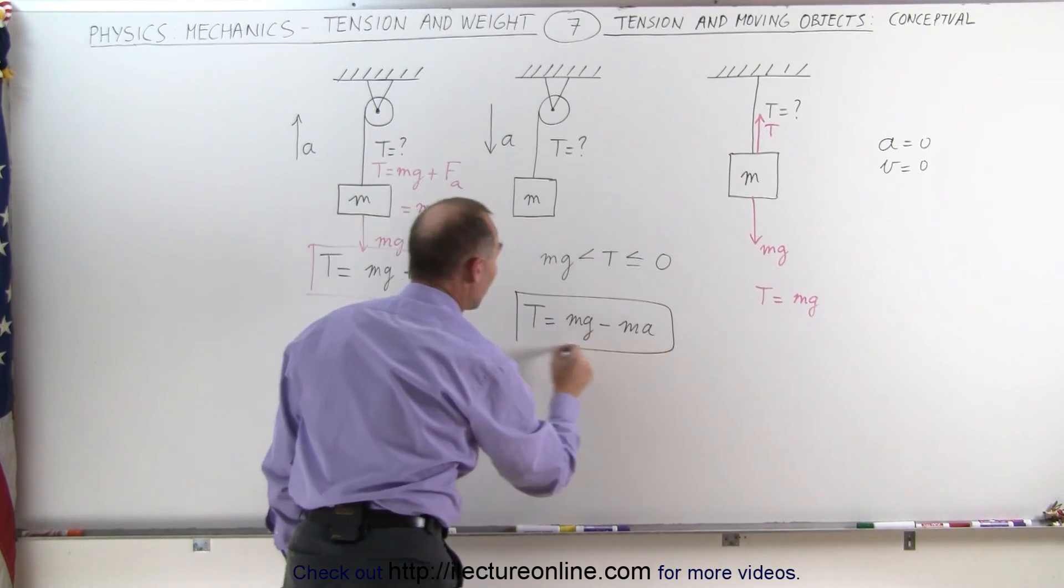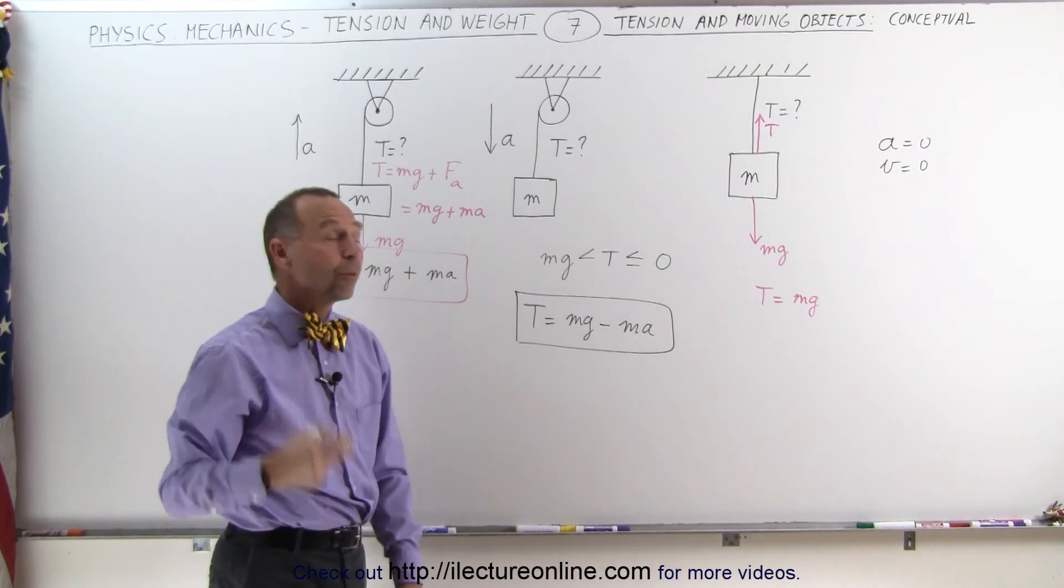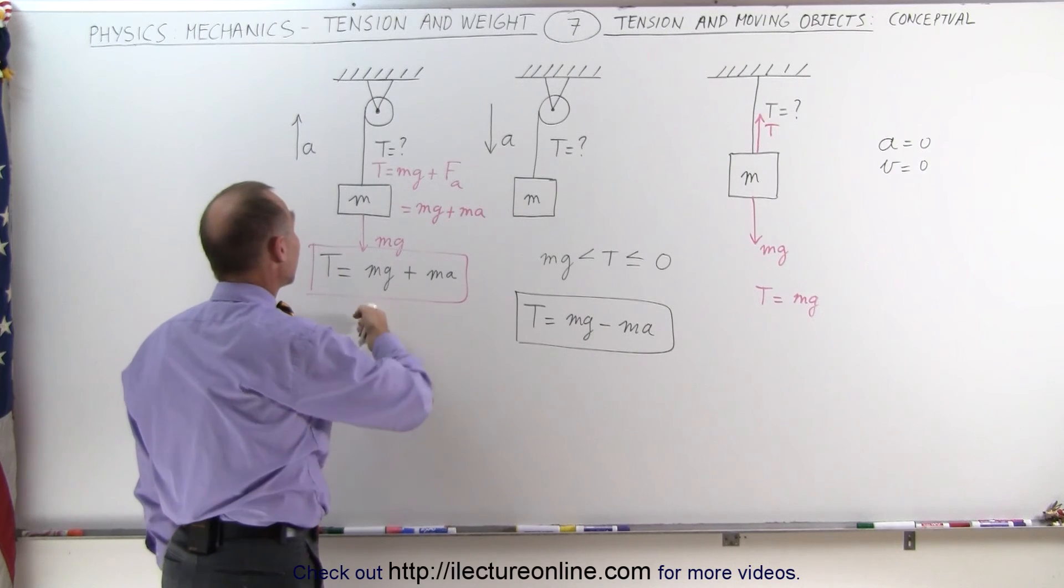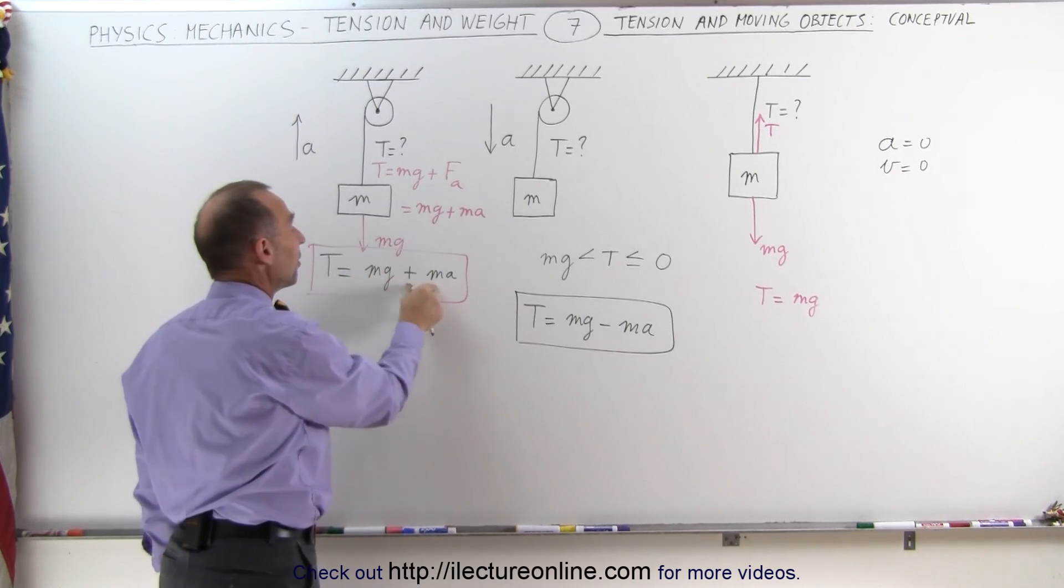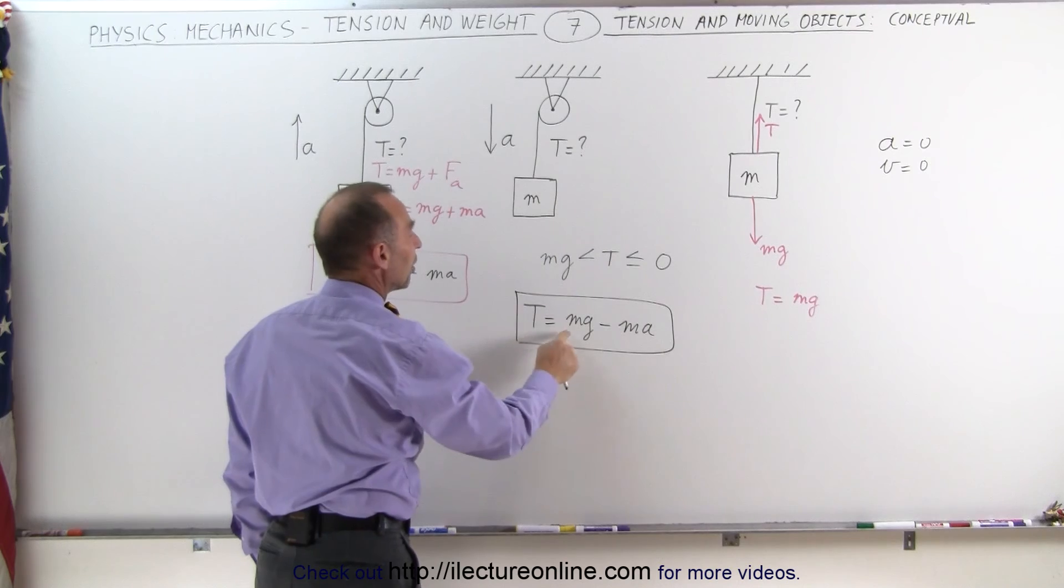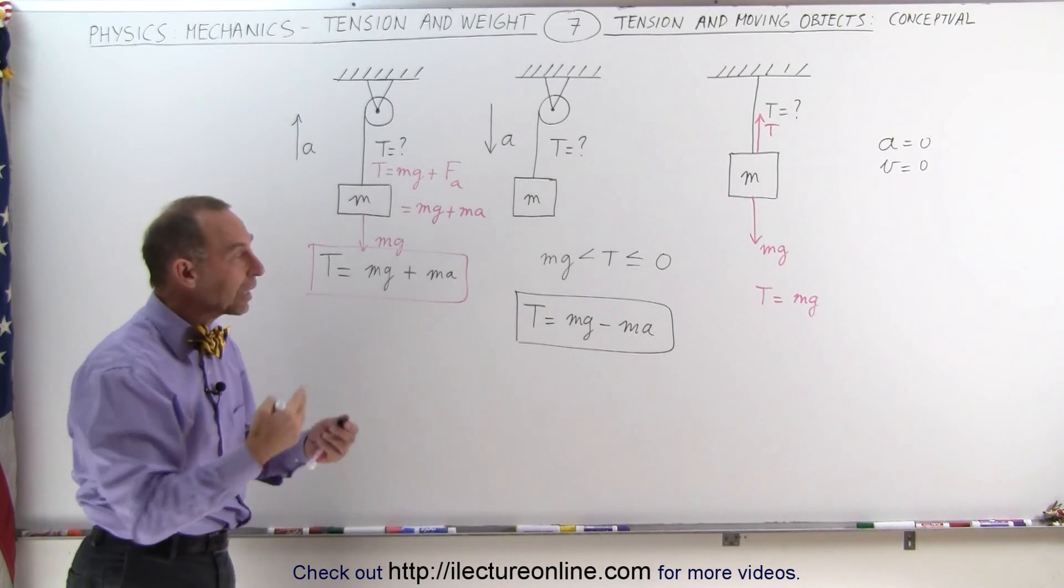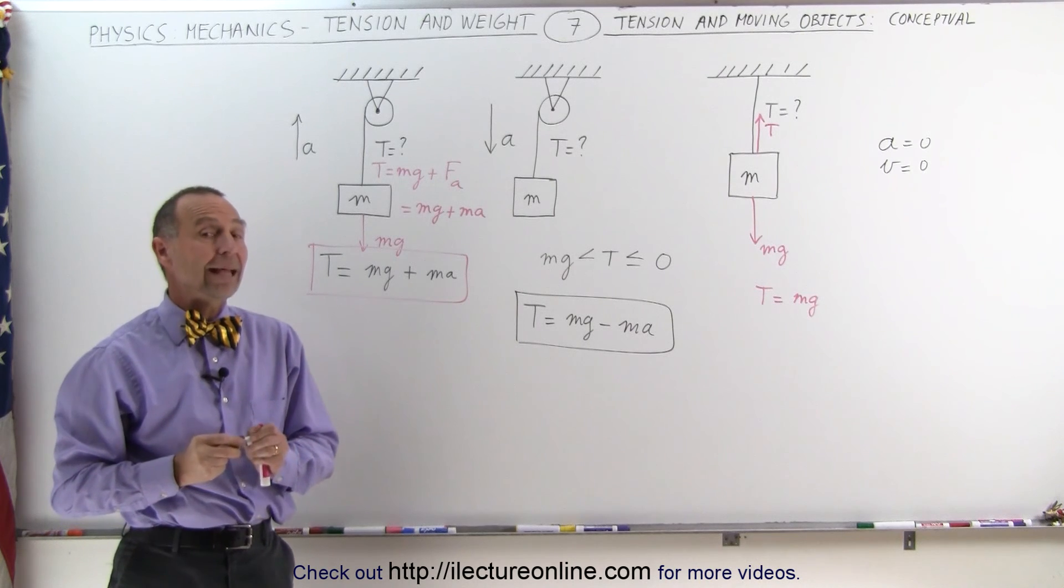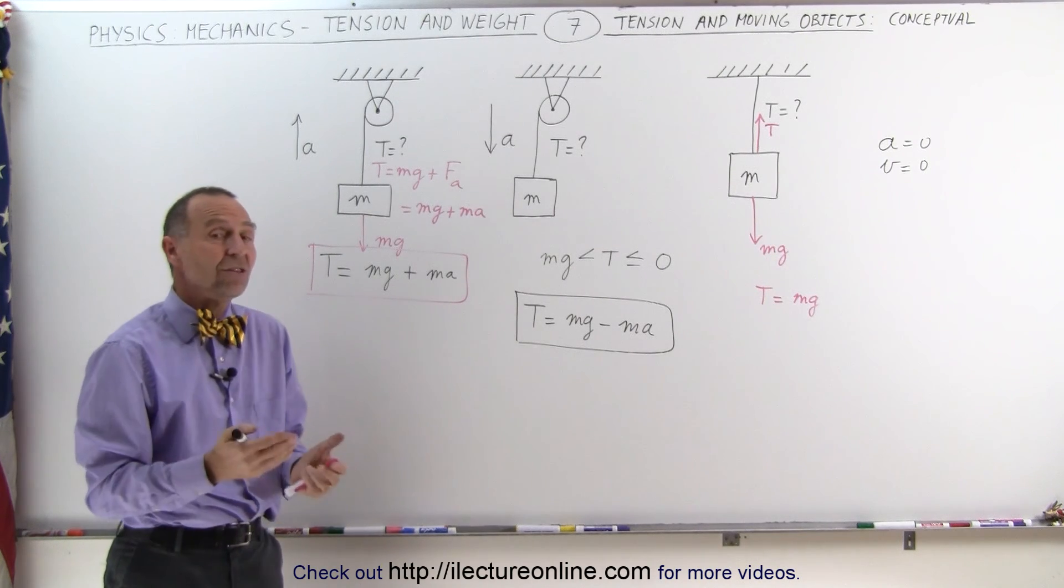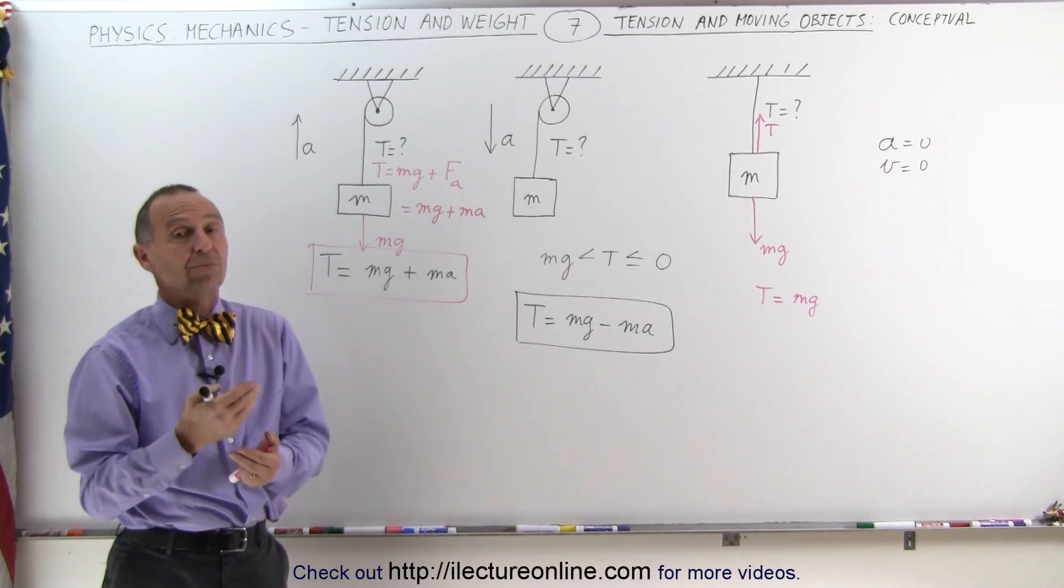From a conceptual point of view, or using some intuition here, we can realize that in the case acceleration is upward, the tension is MG plus MA. If the acceleration is downward, the tension is MG minus MA. And in the previous video, you saw how we can actually calculate that.